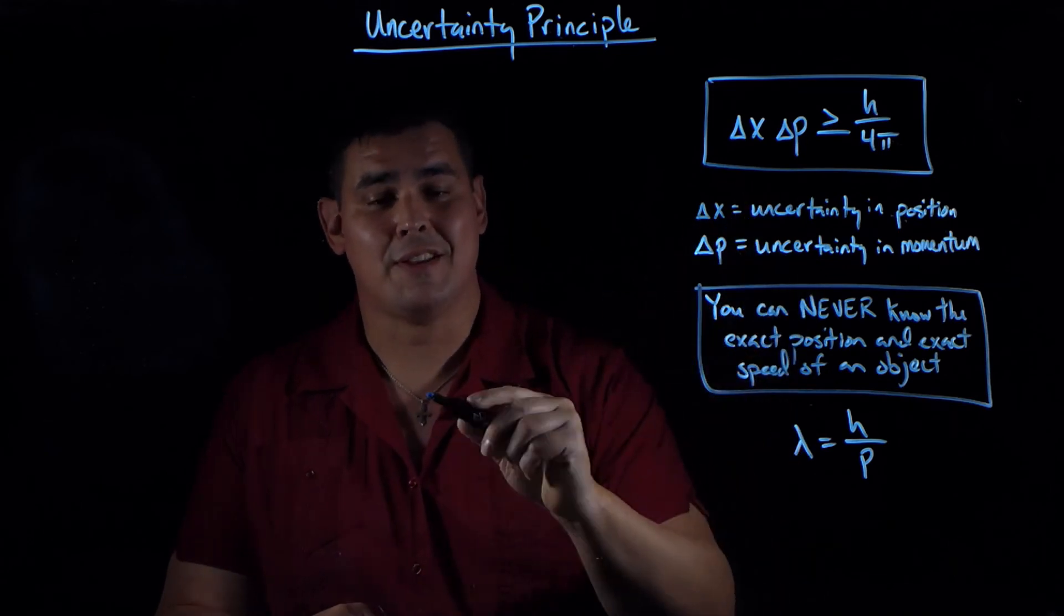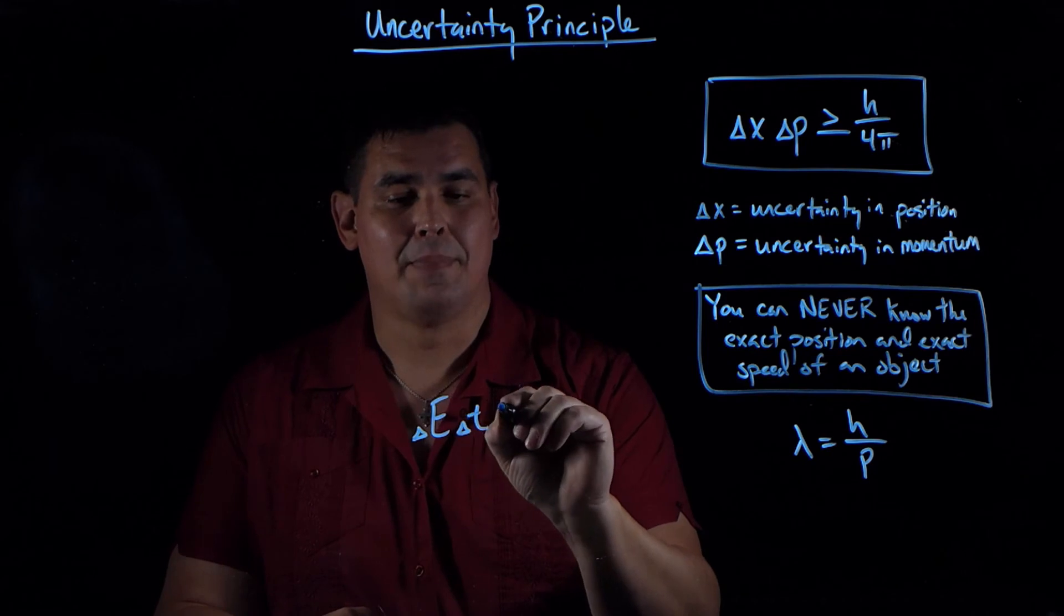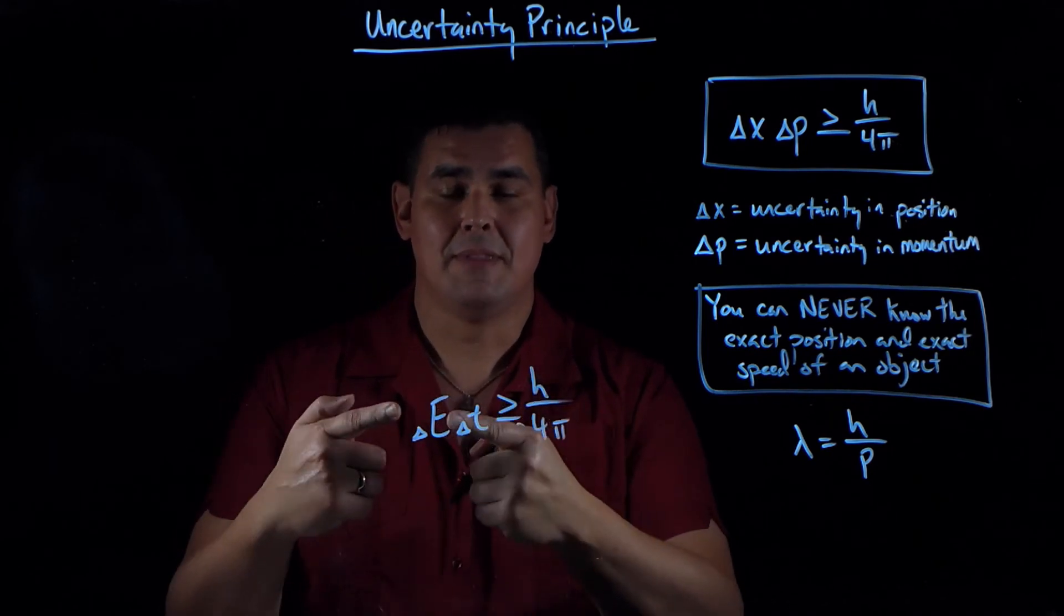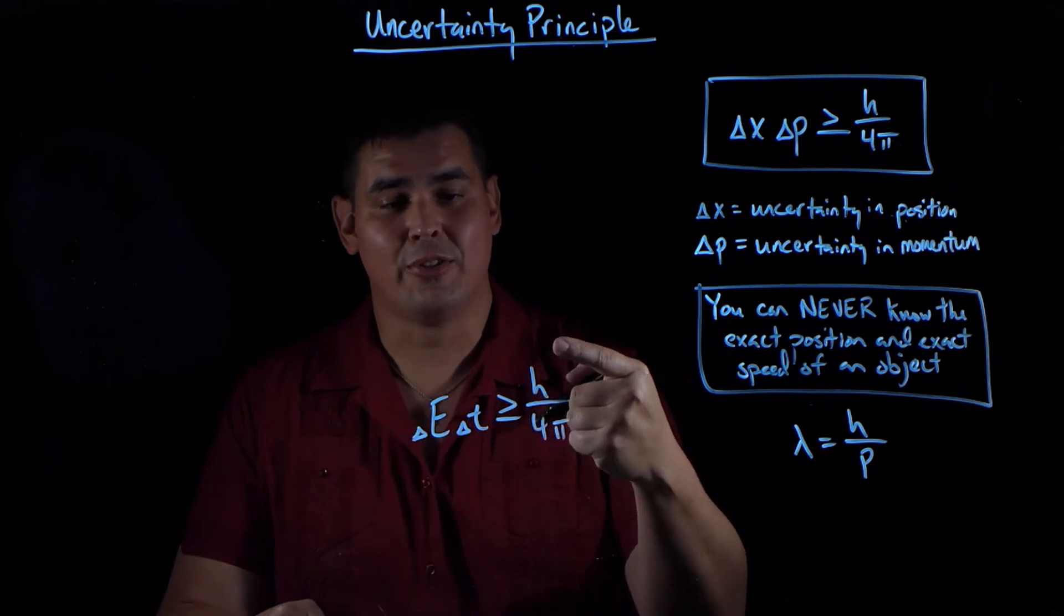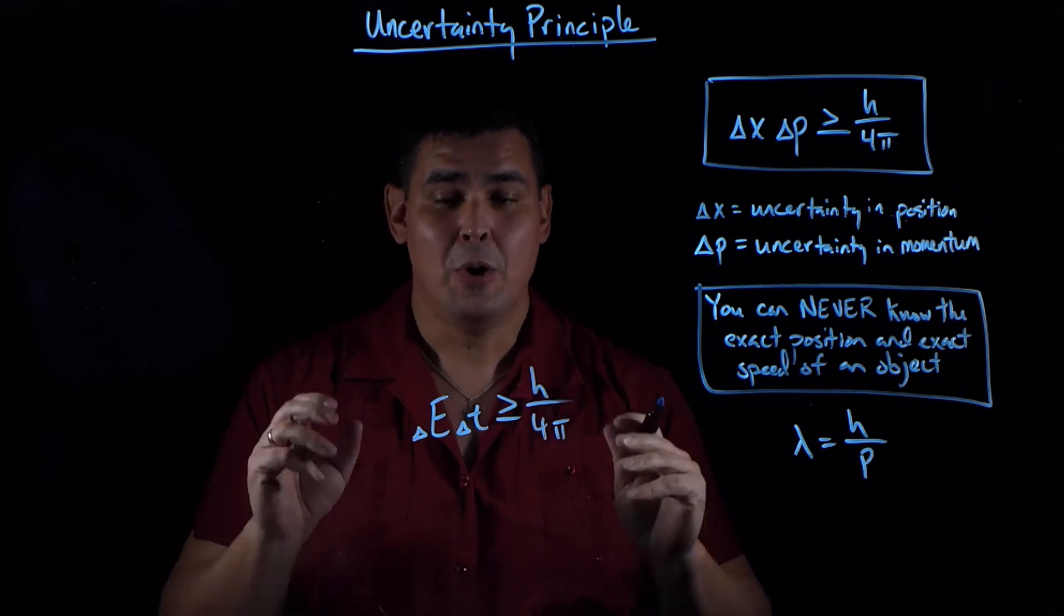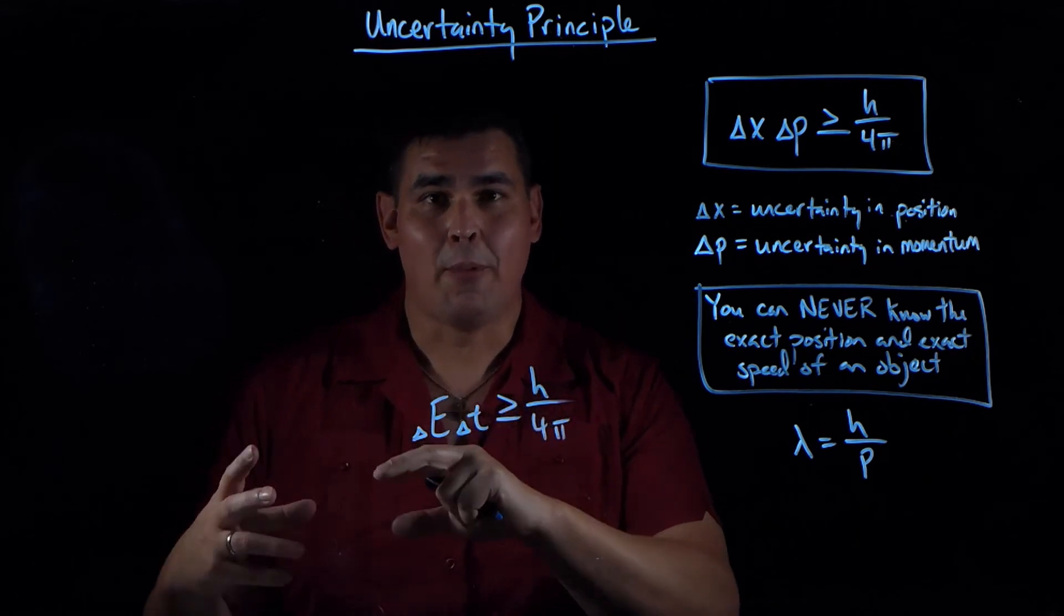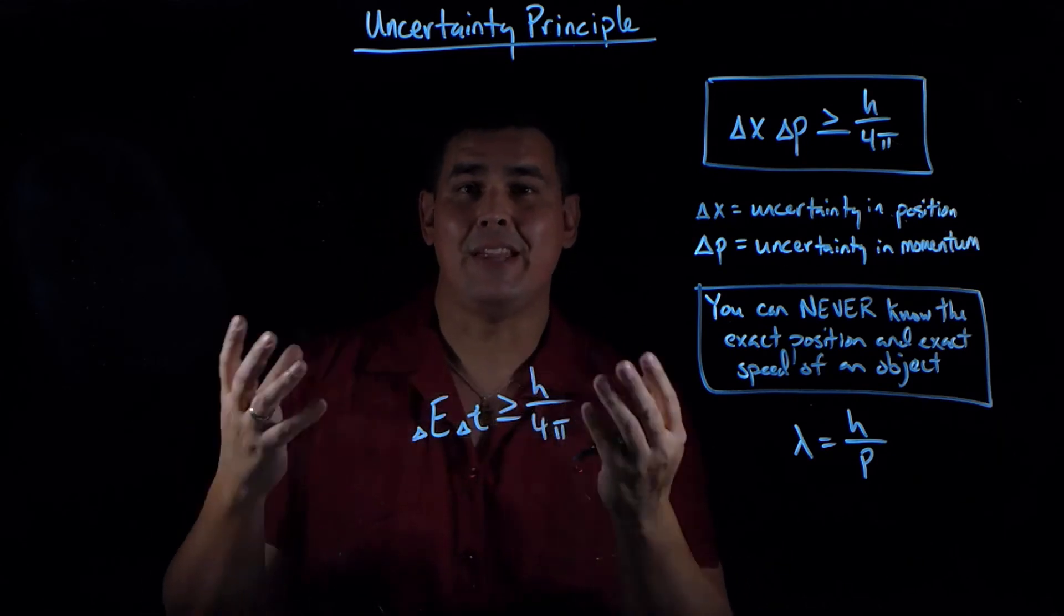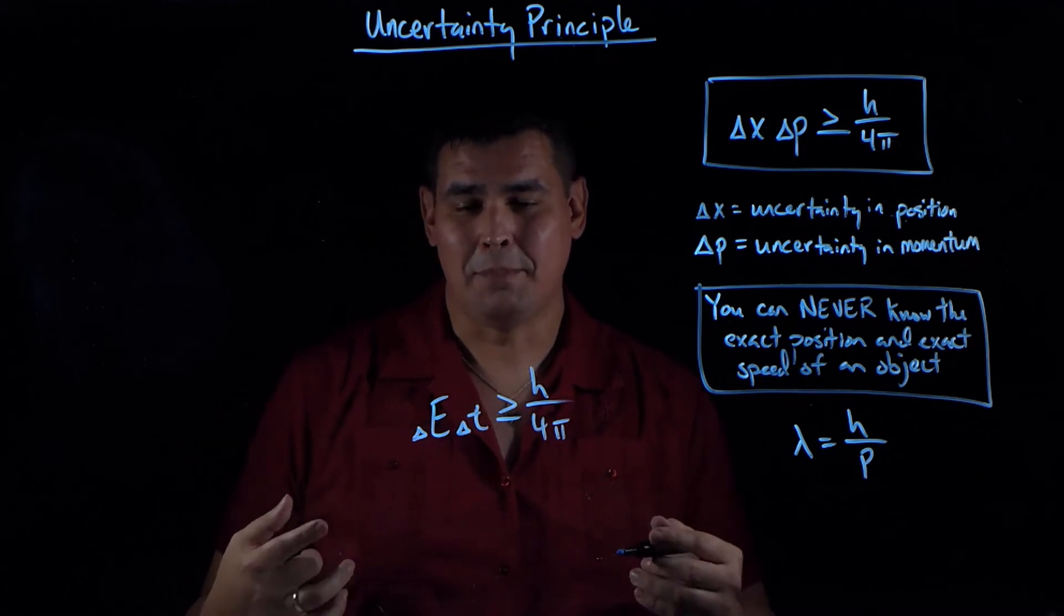Position and momentum aren't the only things that follow the uncertainty principle. Energy and time also follow the uncertainty principle. The uncertainty in an energy measurement times the uncertainty in a time measurement is also greater than or equal to h over 4π. What this means is on a small enough time scale, the energy of a point in space is not necessarily zero. You have particles popping into and out of existence, and that means empty space isn't really empty.